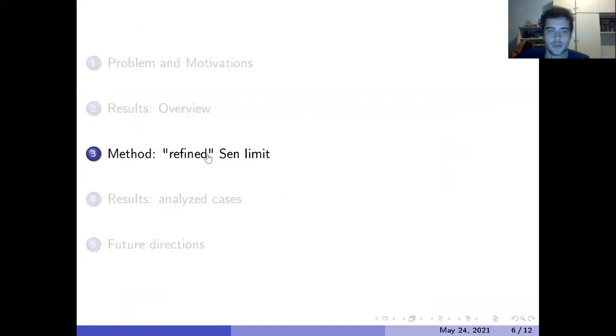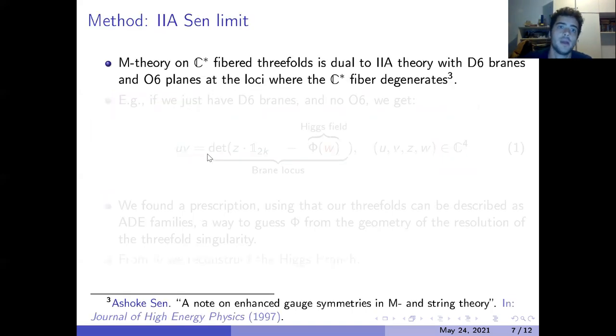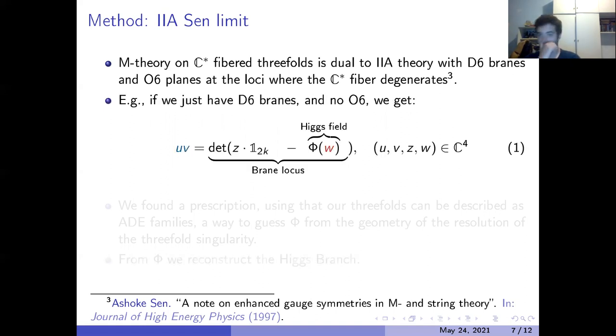Let me say what is the method that we use. We start from M-theory on a C* fibered Calabi-Yau threefold singularity. The Sen limit says that this is dual to Type IIA with D6 branes and O6 planes, and these Type IIA objects sit at the loci where the C* fiber degenerates because the C* fiber is the real line times the M-theory circle, and the M-theory circle degenerates at the loci where we find these Type IIA objects. Let me do an example.